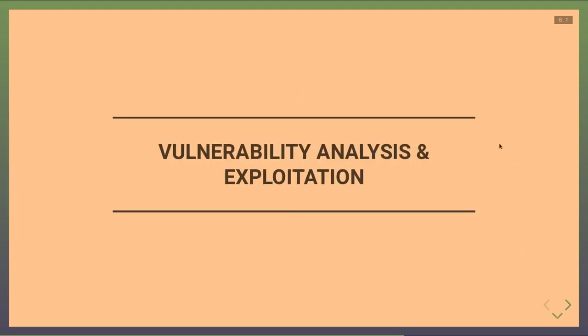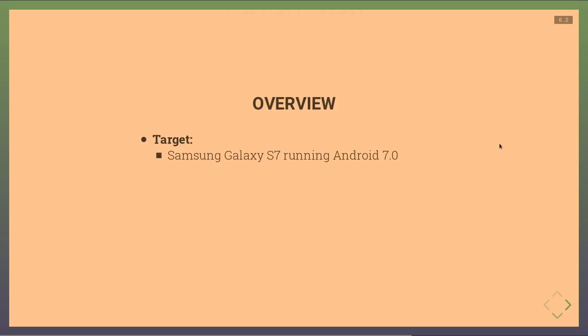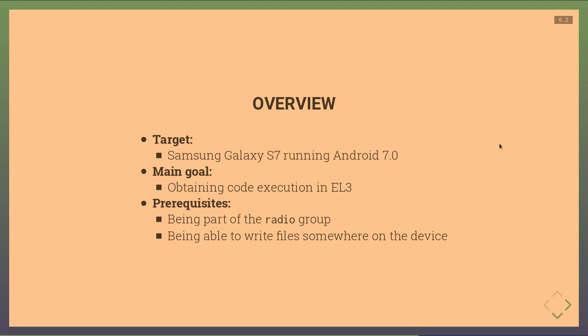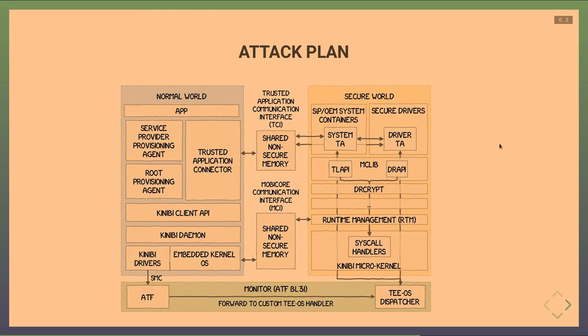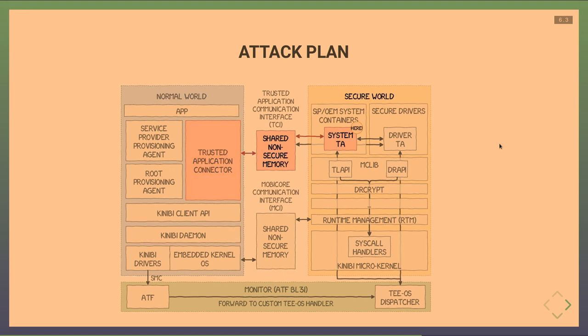The target for exploitation is a Samsung Galaxy S7 running Android 7. The methodology also works on the Samsung Galaxy S9 on its latest version. The main goal is to obtain code execution in EL3. Prerequisites are membership in the radio group — the least privileged group able to communicate with TrustZone — and the ability to write files on the device. The attack plan: find and exploit a vulnerability in a trusted application, then in a secure driver, then attack the trusted OS and monitor.